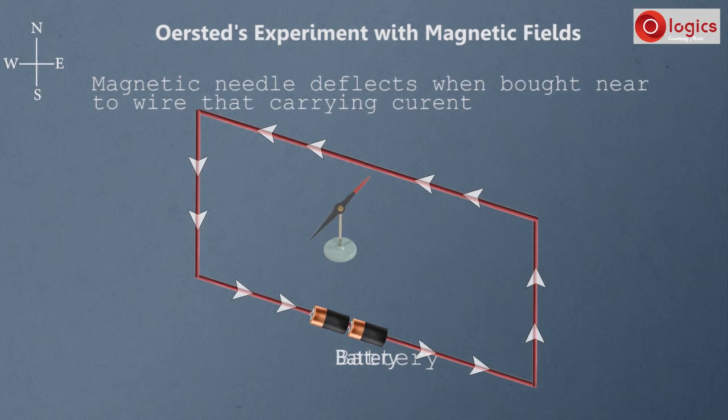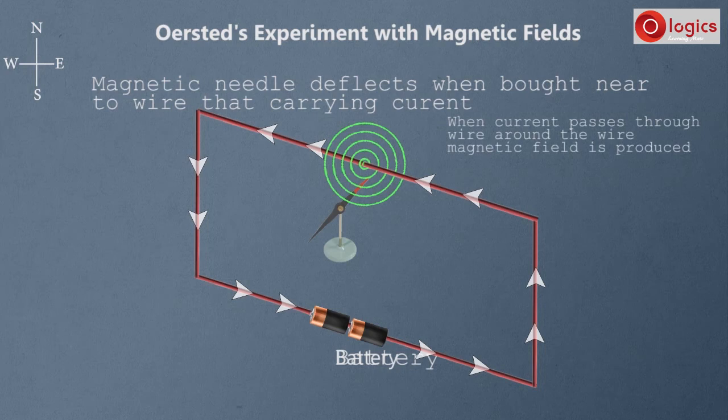The observation here is that the magnetic needle deflects when brought near a wire carrying current. This is explained by the fact that when current passes through a wire, a magnetic field is produced around that wire.